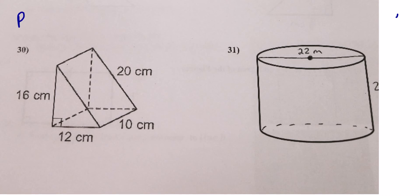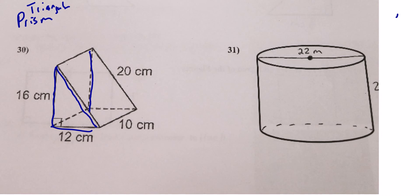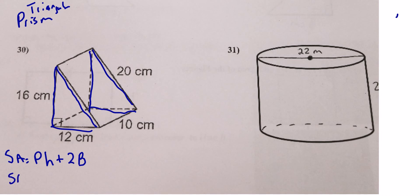Number 30 is also a prism — specifically a triangular prism, meaning the triangular faces are the bases. Surface area = (perimeter of base × height) + 2 × (area of base). The perimeter of the triangular base = 16 + 12 + 20 = 48.